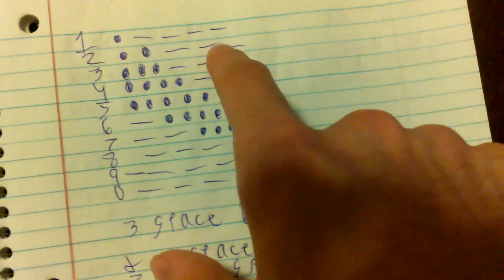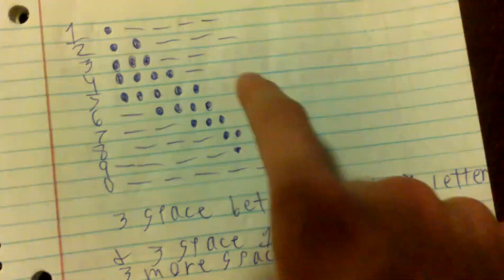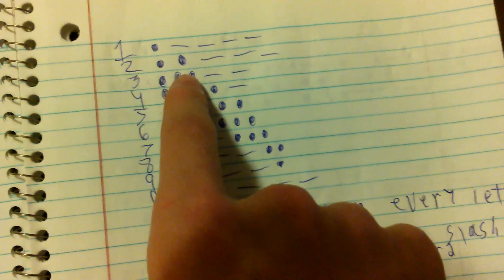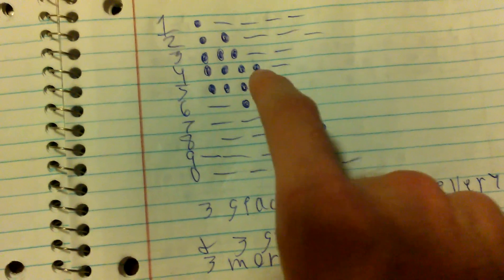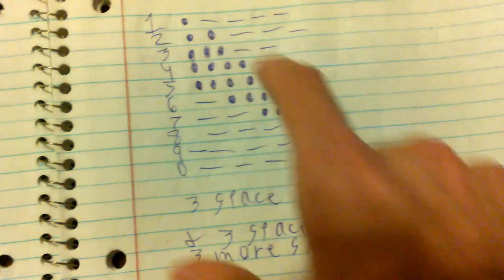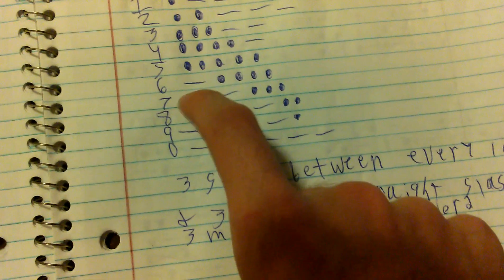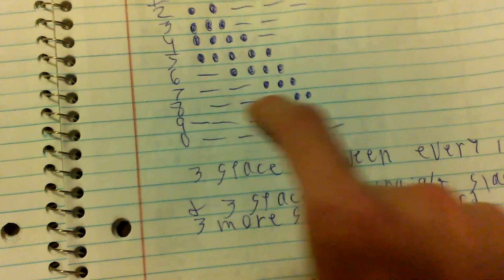A Y is dash dot dash dash, and a Z is dash dash dot dot. Every number has five symbols. As you move through numbers one to five, the dots are overtaking the dashes - that's an easy way to remember one through five. Then on six through zero, the dashes are taking over the dots.